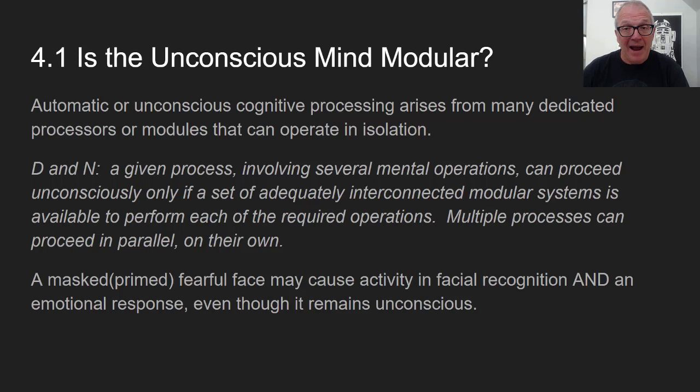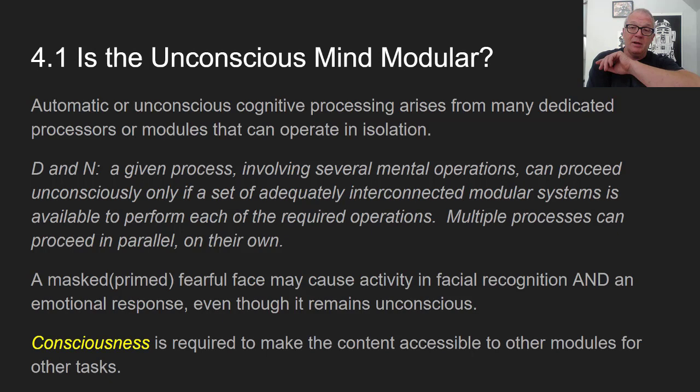Unconscious processes are often modular. For example, a masked fearful face flashed for about 30 milliseconds will activate facial recognition and invoke an emotional response in the viewer even though the viewer doesn't know they've seen it. These different modules get activated and operate in parallel. What's needed, they argue, is that consciousness is required to make content accessible to other modules for other tasks — to get things global and available to more brain systems.